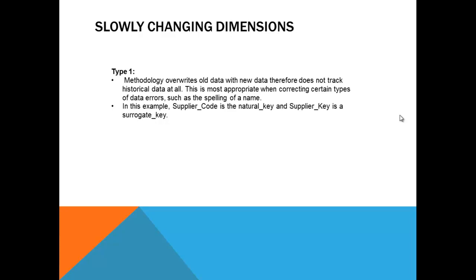The surrogate key comes into picture when you have more than one customer with the same name. That is where it is more relevant for the type 2 dimension, because in type 1 dimension you will have a customer entry only one time. If there is more information added to the customer it will just update or add as one more column, but there will not be a second row. That is type 1 dimension. With type 2, you get the actual difference of when you need a surrogate key and when you don't.